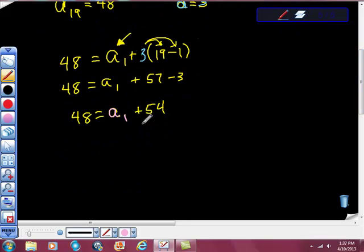I'm going to add negative 48 to both sides. Let's get equal to a sub 1, 54 minus 48 is 6, positive 6, isn't it?